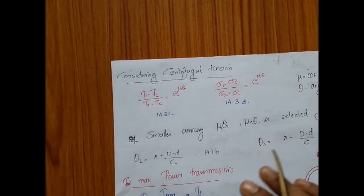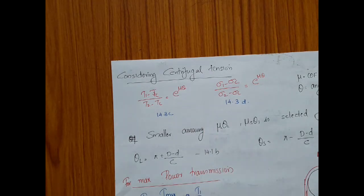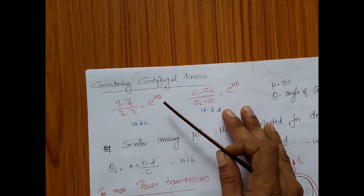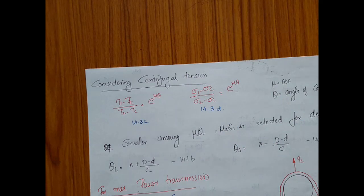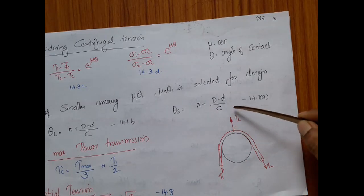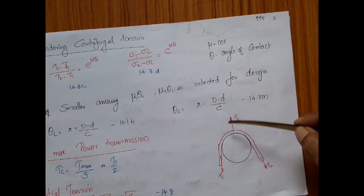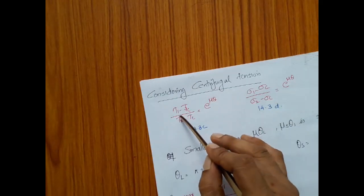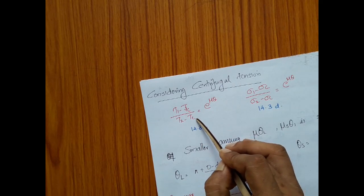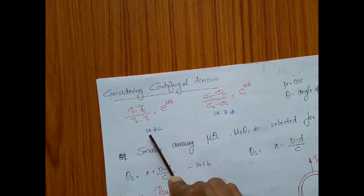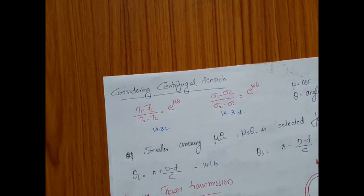Another very important aspect to consider while designing is the centrifugal tension. We select a particular material as the belt material, which has a weight density. As this belt runs over the pulley at some speed, a centrifugal force acts on the belt trying to take it away from the pulley. So the net tension available in the tight side and slack side is T1 minus Tc and T2 minus Tc, or in alternative form, sigma1 minus sigma_c and sigma2 minus sigma_c. These equations are given in your data handbook as 14.3c and 14.3d.